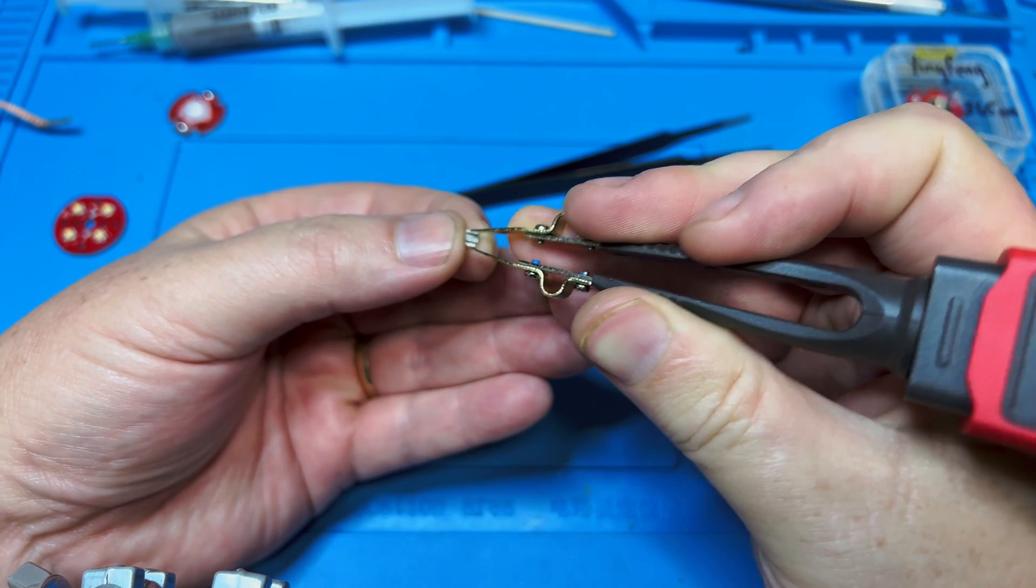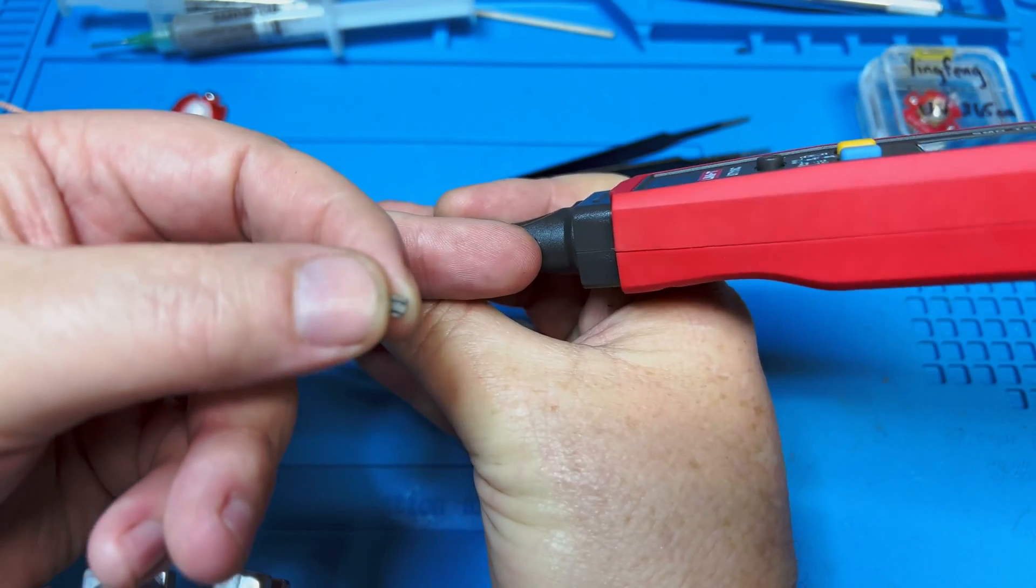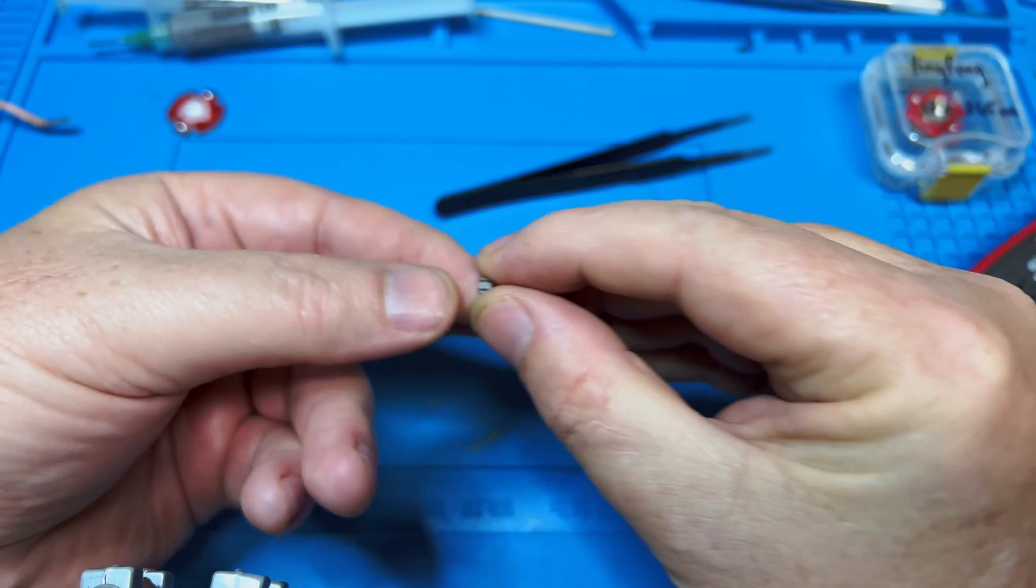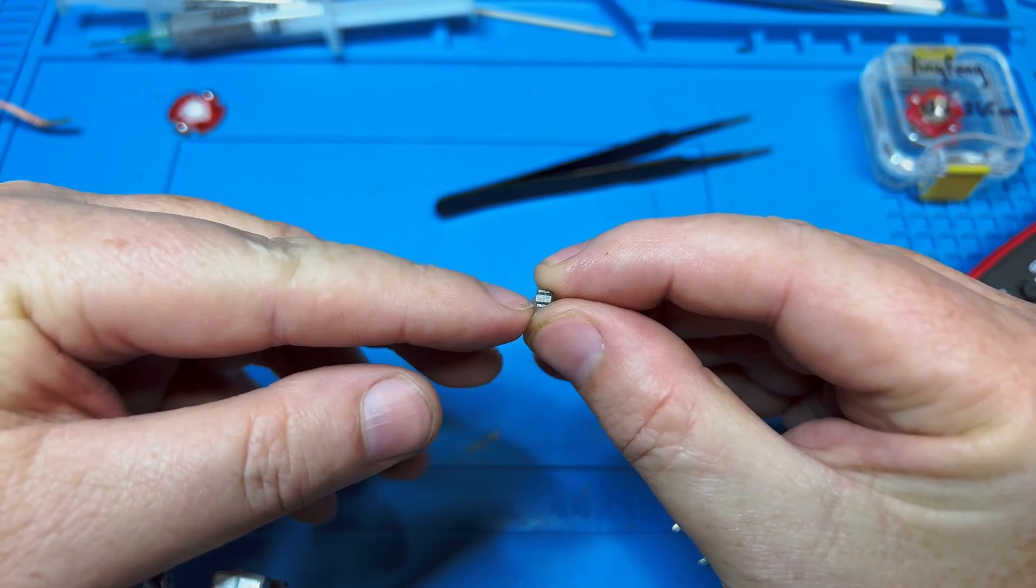And see, it just lit up in my fingers. So I know since this is negative right here on this side, I know that that means that little line on the bottom is the cathode.